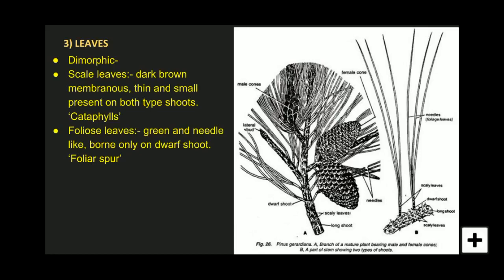The next form of leaves is foliage leaves. Foliage leaves are green and needle-like, born only on the dwarf shoot. Scaly leaves are present on both long shoots and dwarf shoots, while foliage leaves are found only on the dwarf shoot. The function of foliage leaves is to perform photosynthesis, and they remain persistent throughout the life cycle of the plant.